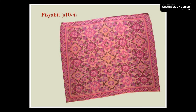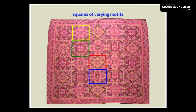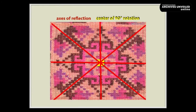An essential feature in the pisha bit is a basic geometric figure, namely the square. In this particular pisha bit, the center design is divided into 25 square sections showing four different motifs. There is a 90-degree rotation at the center of the design, a horizontal and a vertical reflection, with axes passing to the center.